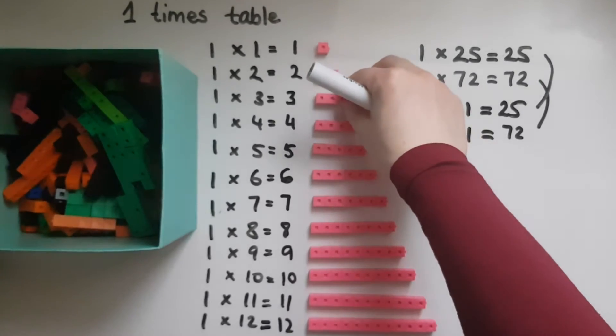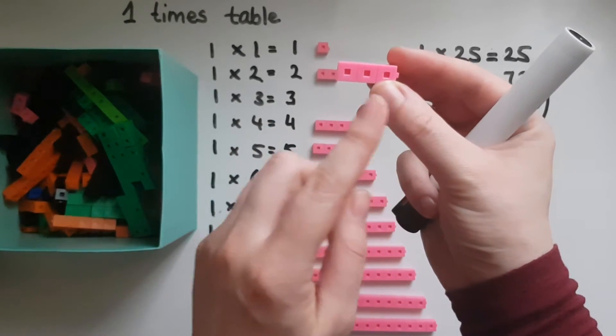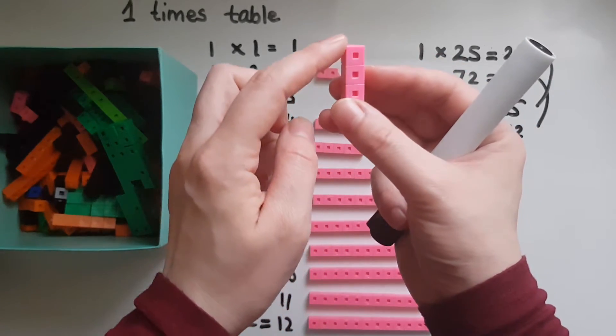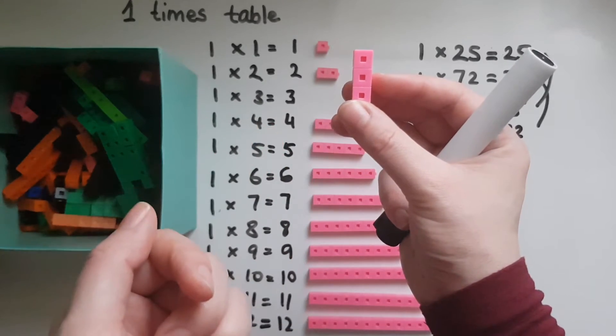Another way to look at this is that one times three is equal to three, so one row of three is equal to three, which is the same as one column of three which gives us three again.